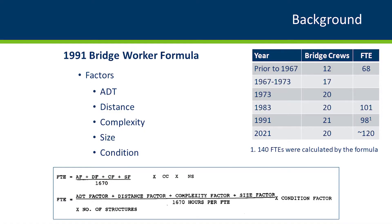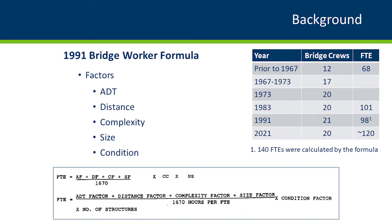In 1991, a task force was created specifically because that formula was based on past production only and not on physical factors of the bridge population. The job of that task force was to identify quantifiable factors that would impact the maintenance needs for the structures. The factors they identified were average daily traffic (ADT), the distance from the bridge crew location to that structure, the complexity, the size, and the condition of the structures within a certain district or maintenance area. All those factors were combined and then divided by the available hours per bridge worker.